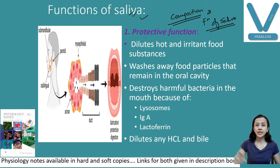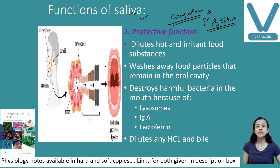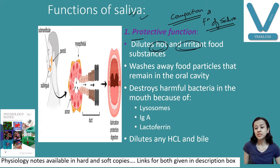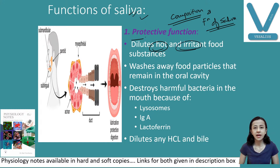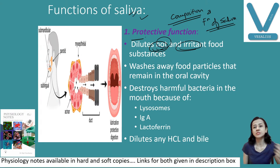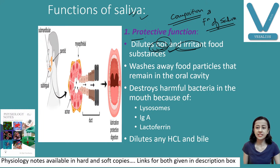How does saliva protect our oral cavity? First, if we have taken hot or irritant food, this food gets diluted by saliva. If the food is very hot, it may injure the mucous membrane of the oral cavity, and that is protected by the diluting function of saliva.